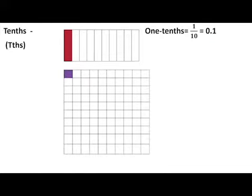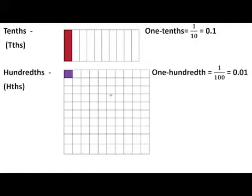Similarly for hundredths — this square box is divided into 100 equal boxes, and one box is shaded in blue-purple color. We represent it as one hundredth, written as 1/100. This one shaded part is represented as 1/100, and in decimal it is written as 0.01, read as zero point zero one.